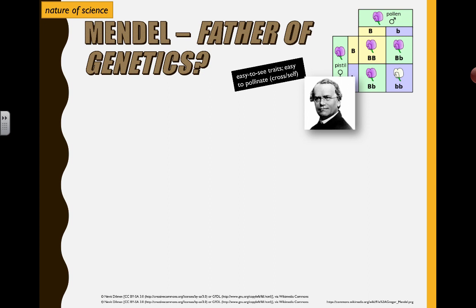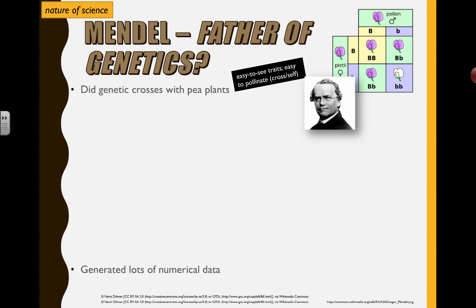This guy was a monk but he had a fascination for numbers and data and pea plants. So this guy was kind of creative — he took a bunch of pea plants in this giant garden that he had and he started having them make babies with each other. Some people might think that's kind of strange but he was doing little scientific experiments.